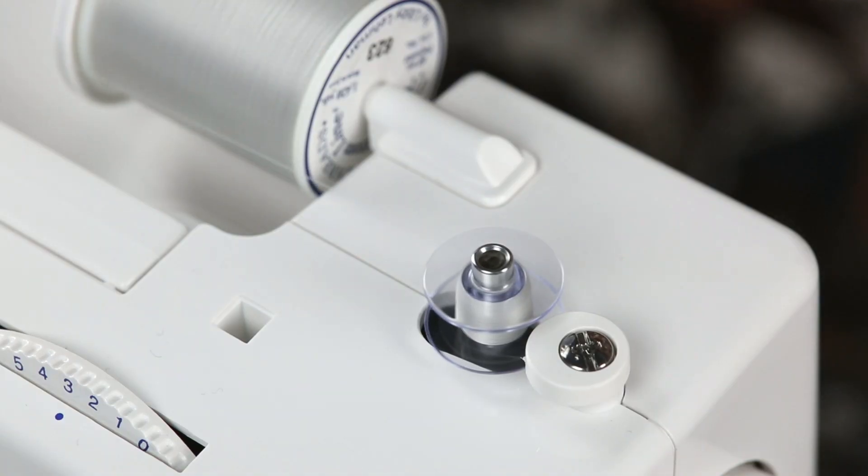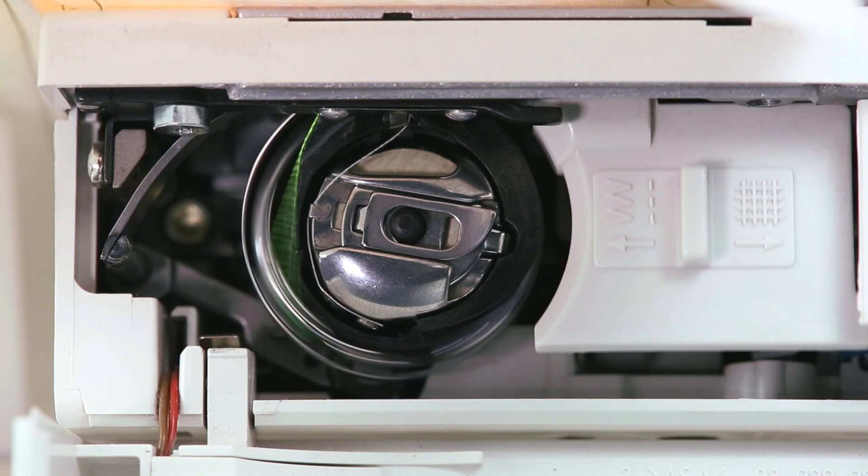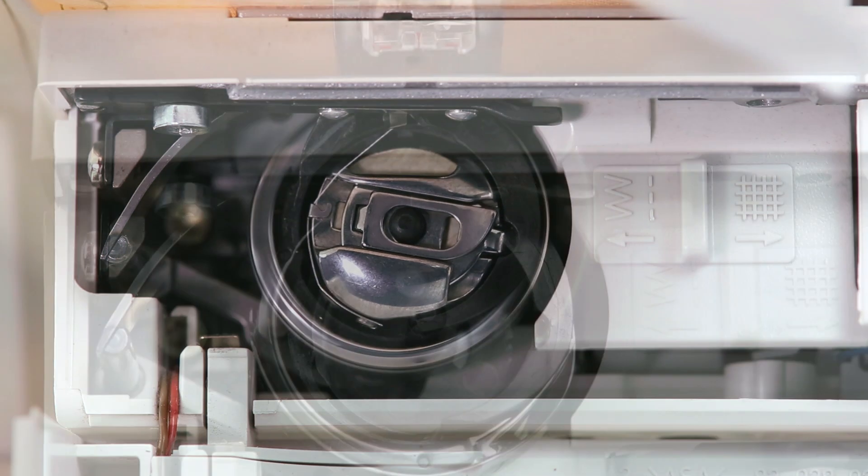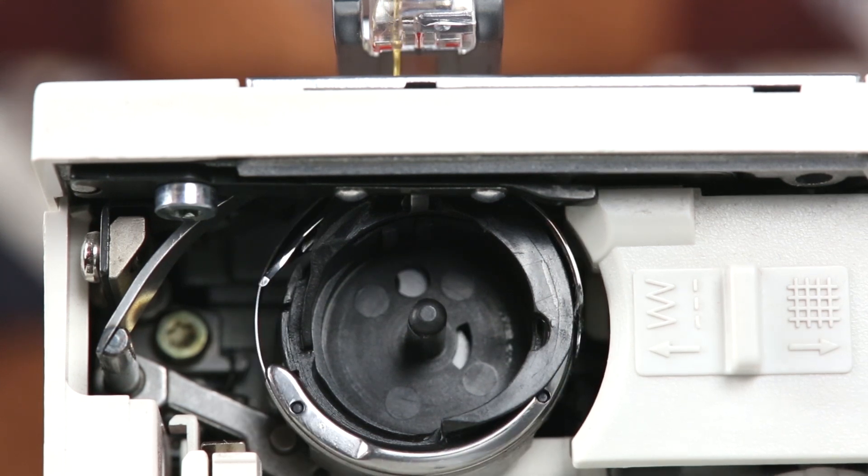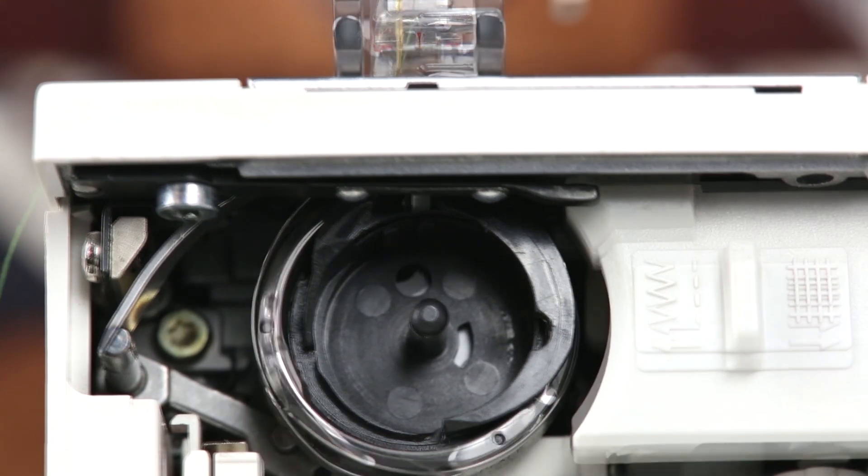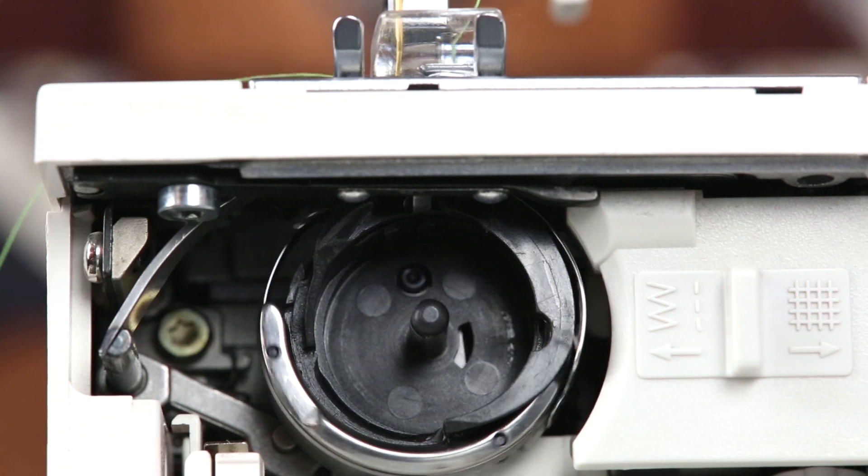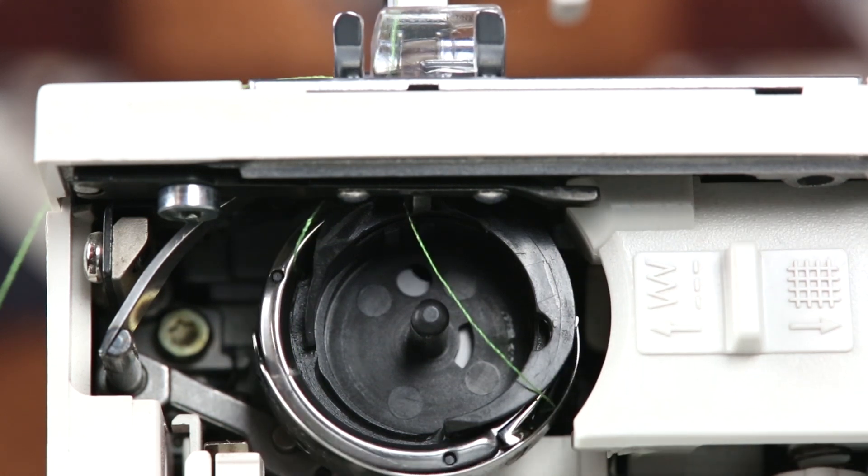When fabric is sandwiched between both threads, the threads form a loop which then creates a stitch. This rotary bobbin mechanism has a hook that rotates around the bobbin case. The top thread is grabbed by the hook and forms a loop which the bobbin thread is pulled into.